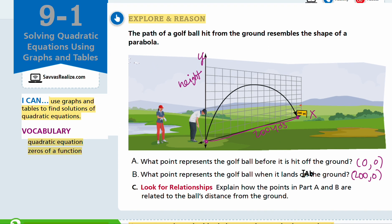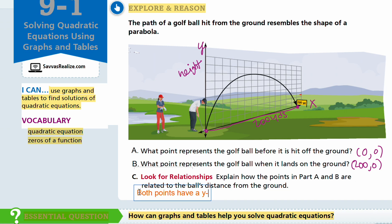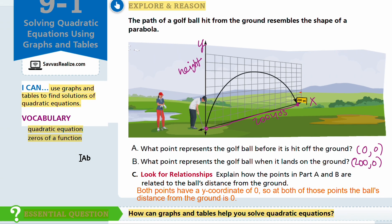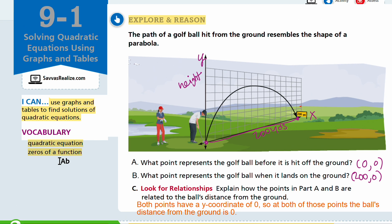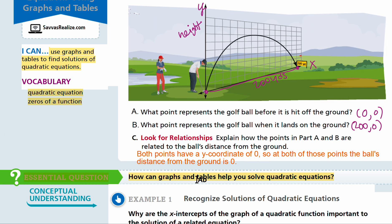Could we explain how the points in part A and part B are related to the ball's distance from the ground? The ball's distance from the ground is the height, so they both have a height of 0 — that's the common point. Both points have a y-coordinate of 0, so at both of those points, the ball's distance from the ground is 0. That's the essential question in this lesson: how can graphs and tables help you solve quadratic equations?